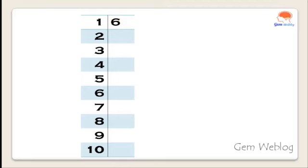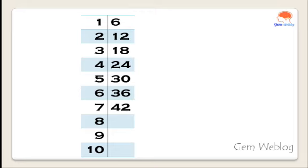The multiplication table of 6: 6, 12, 18, 24, 30, 36, 42, 48, 54, and then 60.